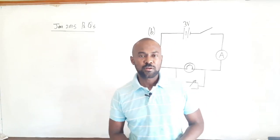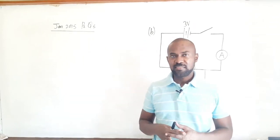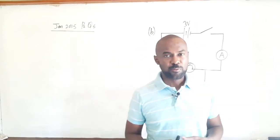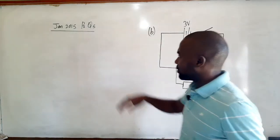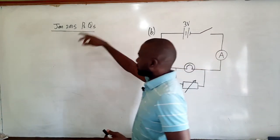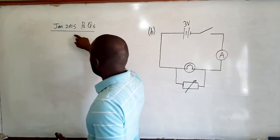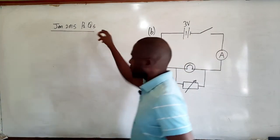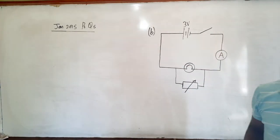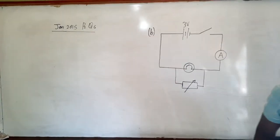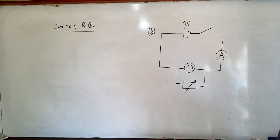In this video we'll continue looking at CSEC physics past paper questions. We'll be looking at January 2015 Paper 2 Question 5, part A1.